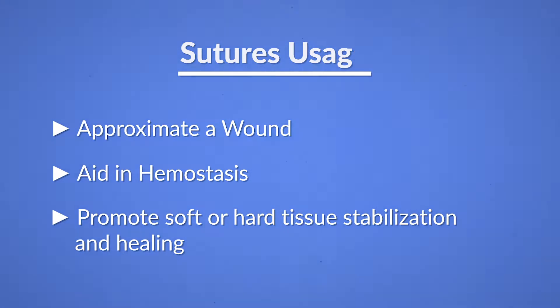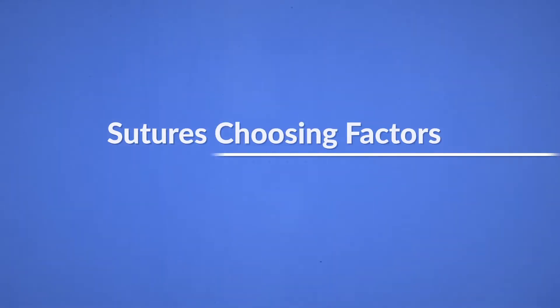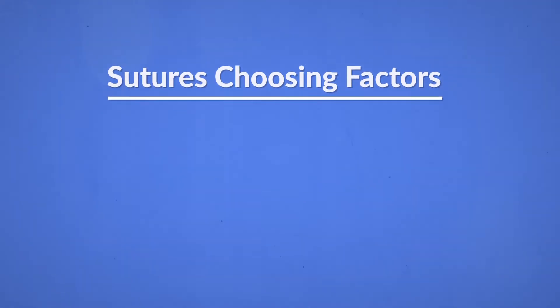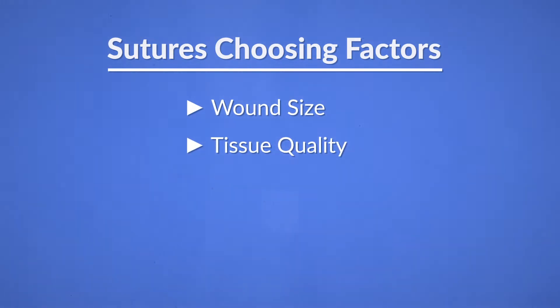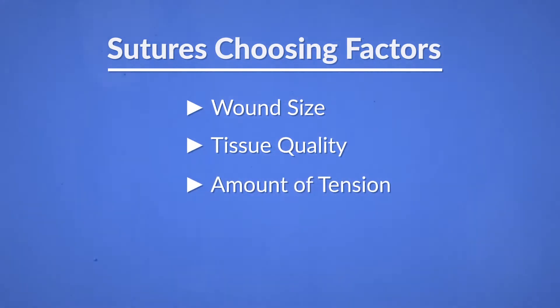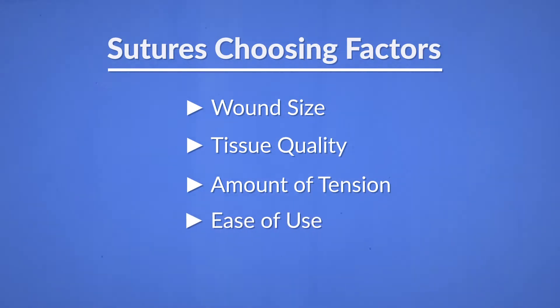There are a few factors you have to keep in mind when choosing a particular suture. This includes the wound size, tissue quality, the amount of tension you would need for that wound to remain stable, the ease of use, and chair time required.